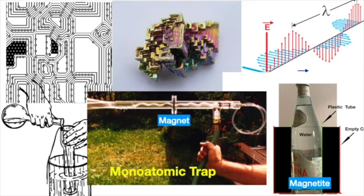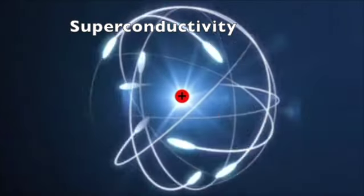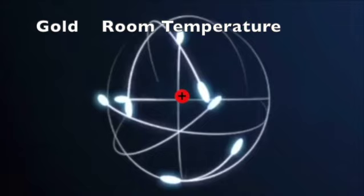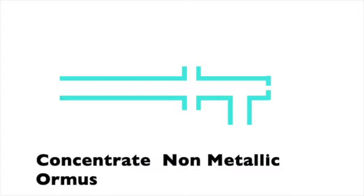Therefore, magnetic materials can be used to filter out and concentrate monoatomic elements. When the transitional metals are in the ormus state, these atoms are superconductors. However, only gold achieves superconductivity at room temperature, the others only at lower temperatures. This animation shows how monoatomic elements are concentrated.